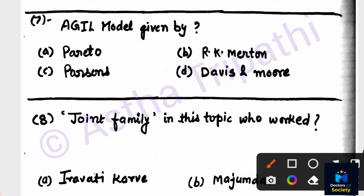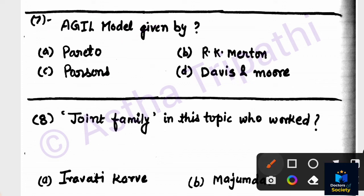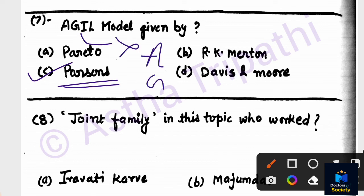Question number seven: Who gave the AGIL Model? Options are Pareto, Merton, Parsons, Davis and Moore. The AGIL Model was given by Talcott Parsons. AGIL stands for: A = Adaptation, G = Goal Attainment, I = Integration, L = Latency. Remember this in the same order.